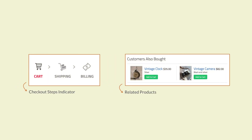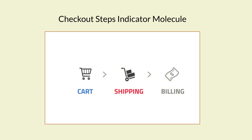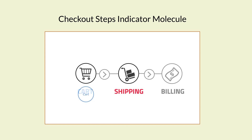Once atoms bind together, they grow in complexity and turn into molecules, which provide more functionality. In our example, the checkout steps indicator and the related product modules are molecules. Let's view the checkout steps indicator in more detail. The atoms, or inner modules, are the icons used for each step, the icons used to connect the steps, and the text used under the icons.